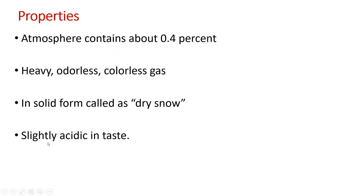Let us see properties first. The atmosphere contains about 0.4-0.5% of carbon dioxide. It is heavy, odorless, colorless gas, and in solid form it is called dry snow. It is slightly acidic in taste.